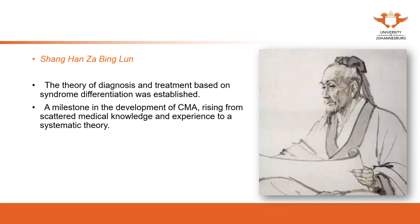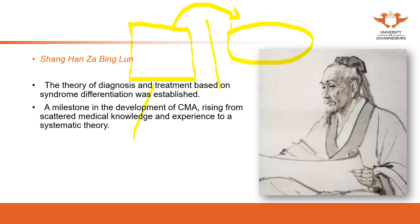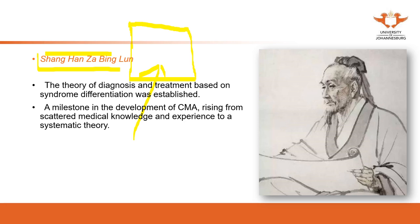The last classic is the Shanghan Zabing Lun, one of the most important classics. The previous three classics discussed ample information on theory — how to analyze, how to apply, and how to explain phenomena in human health and nature. However, they did not discuss how to apply this theory into clinical practice. The Shanghan Zabing Lun bridges that gap between theory and clinical practice, showing us with examples how to apply theory in practice.